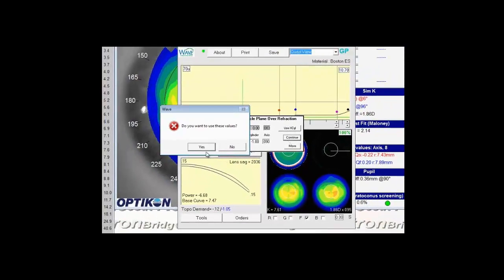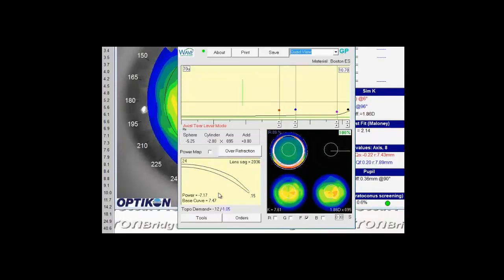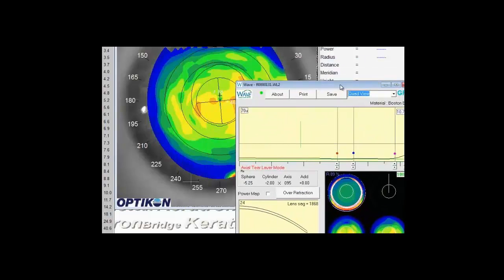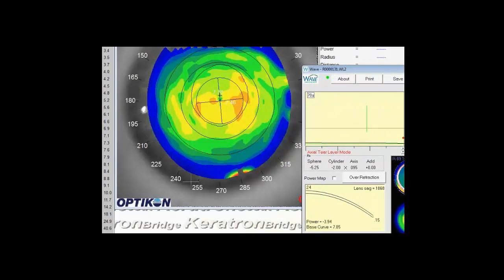You'll be prompted if you want to use the values, select yes. One thing you'll note is the thickness of the lens was increased immediately and if you watch the profile as I spin around, you'll see the inferior portion of the lens is much thicker than the superior portion. That's the front surface prism orientating the contact lens.